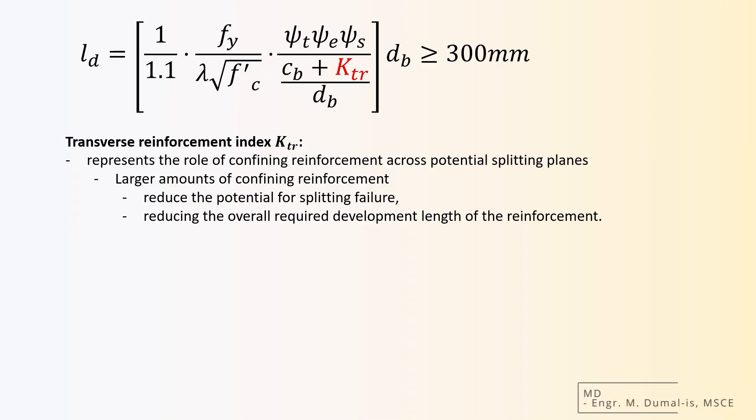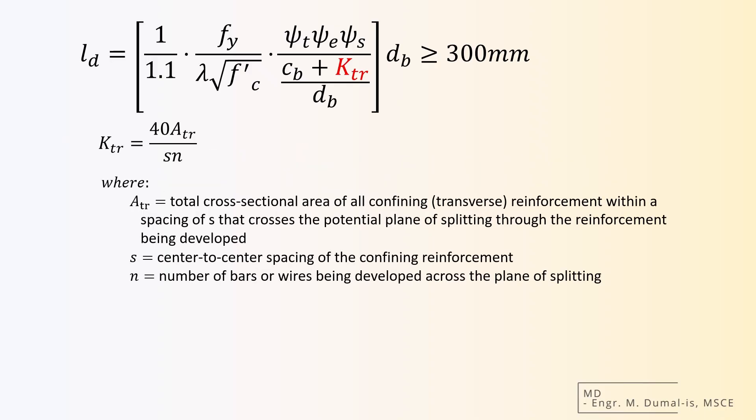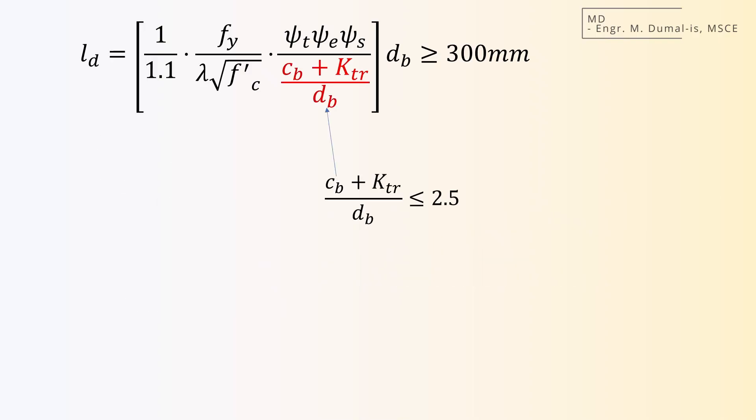Ktr can be computed as 40 times the total cross-sectional area of all confining reinforcement within a spacing that crosses the potential plane of splitting through the reinforcement being developed, over the product of s and the number of bars or wires being developed across the plane of splitting. Because the presence of confining reinforcement has the potential to decrease development length, it is conservative to take the value as 0. The entire value of the quantity cb plus Ktr divided by db cannot be less than 2.5. If the value exceeds 2.5, there is a tendency for the rebar to experience pull-out failure.